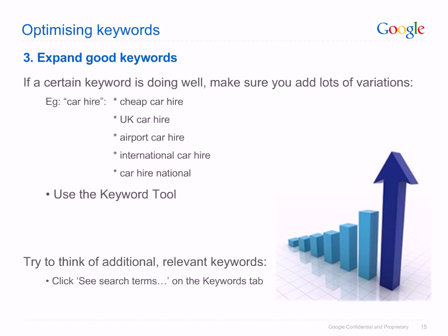If a certain keyword is doing well, make sure you add lots of variations. For example, if the keyword 'car hire' is performing well, you could add the following variations: Cheap car hire, UK car hire, Airport car hire, International car hire, Car hire national. The Keyword tool can help to find ideas for variations, or try clicking 'See search terms' on the Keywords tab.